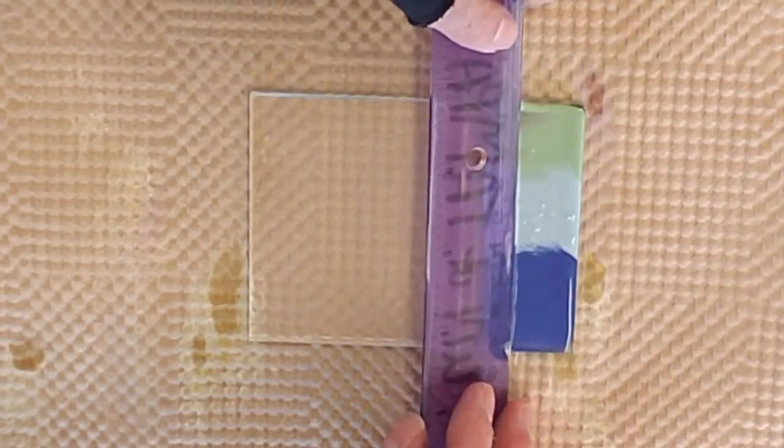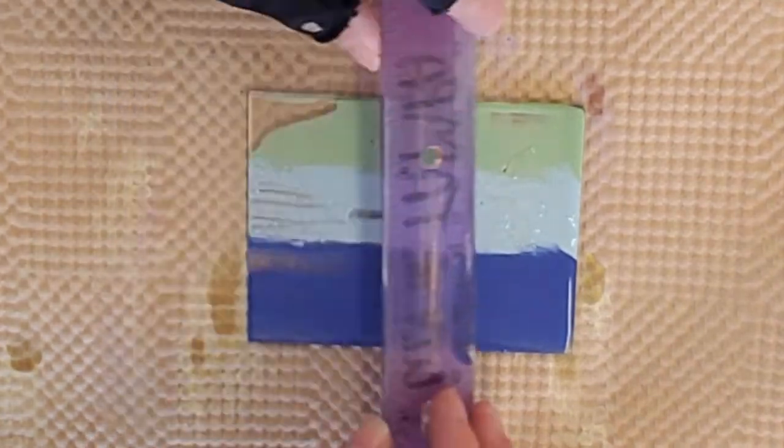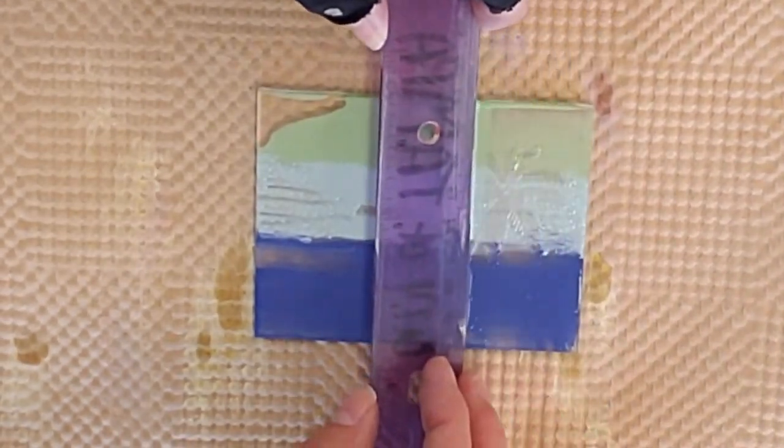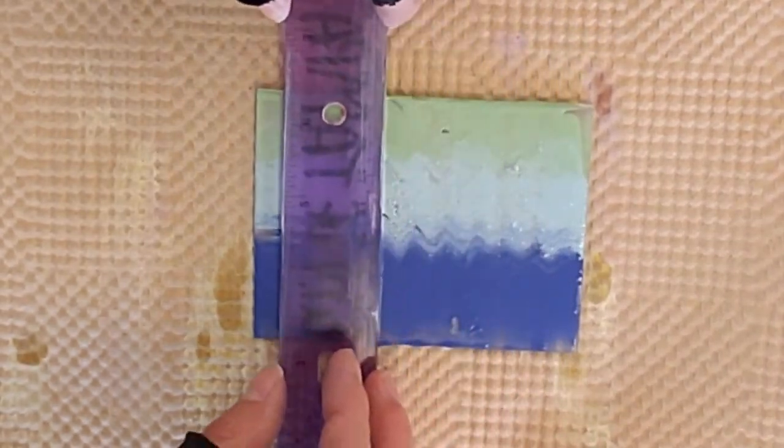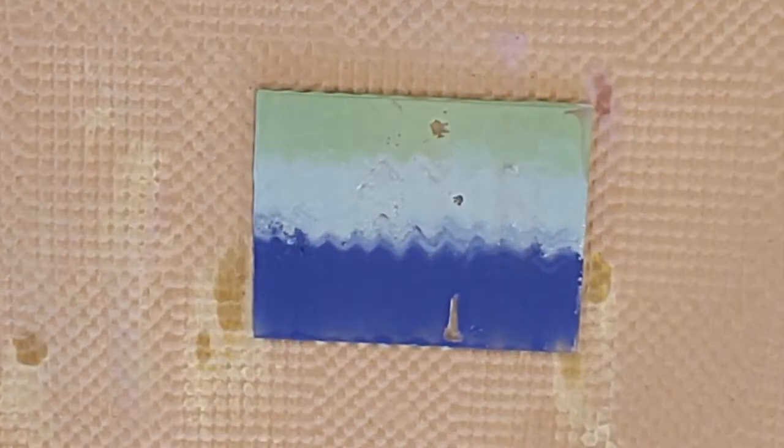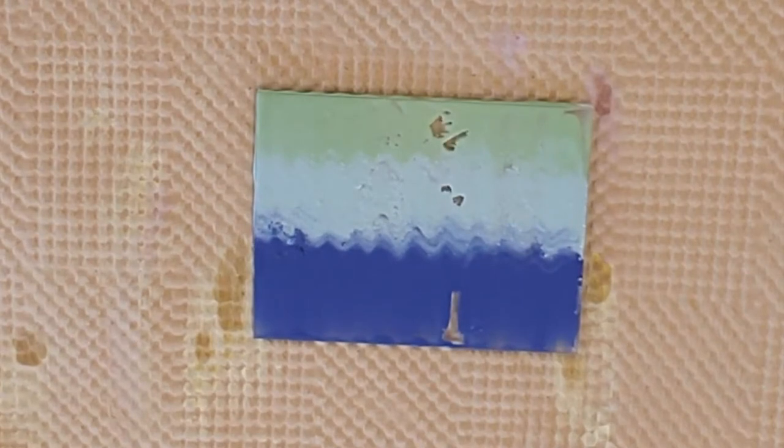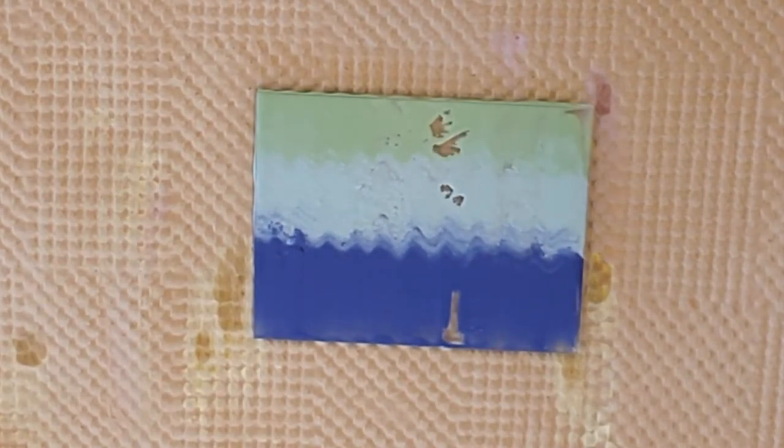I repeated the same process with some different colors for the palm trees, and to make the blue section look a little bit more like waves I just wiggled my ruler as I swiped across on one of the last swipes. So you make sure that you get the color spread out and then you do a little wiggle on your last swipe.